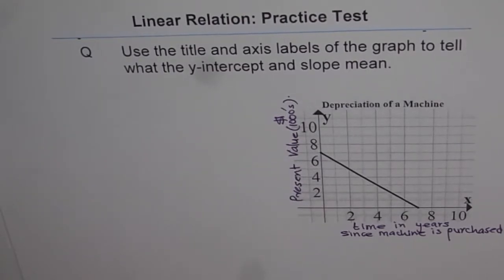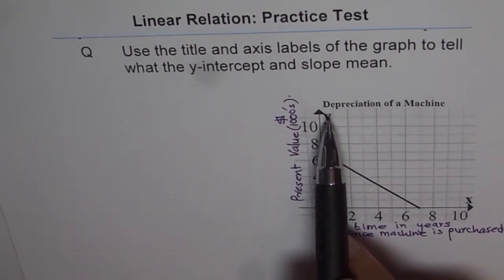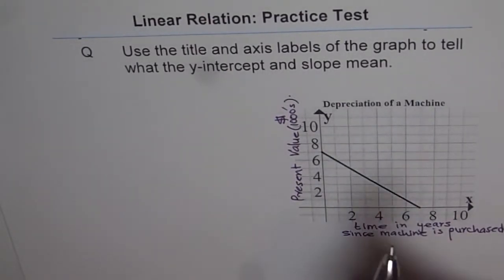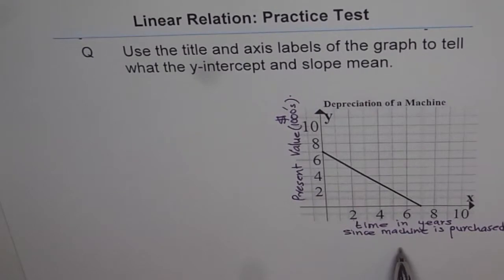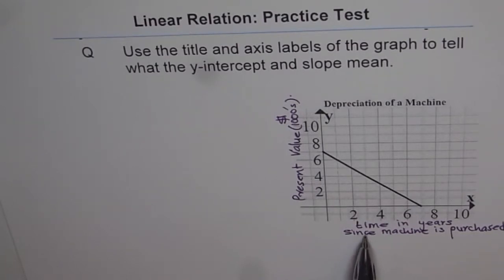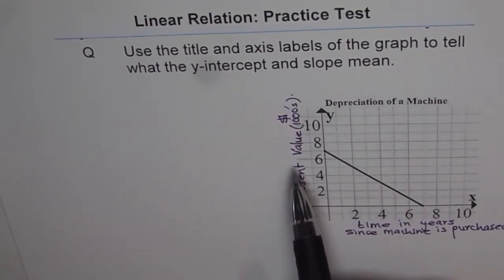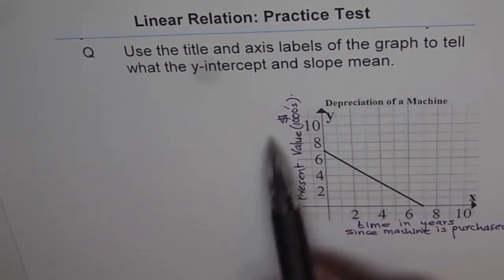Now if you study the graph, we are given here depreciation of a machine. Along the x-axis, we have written time in years since machine is purchased. And on the y-axis, we are given present value in thousands of dollars.